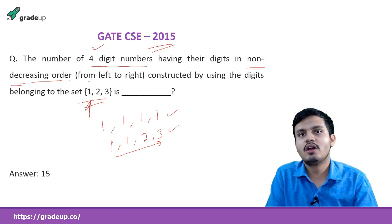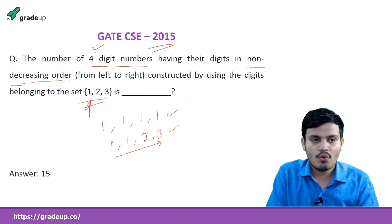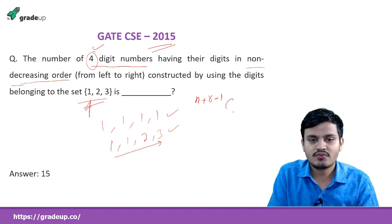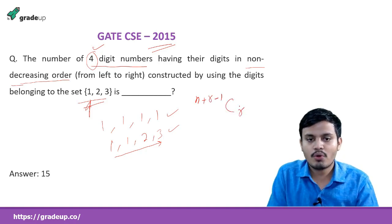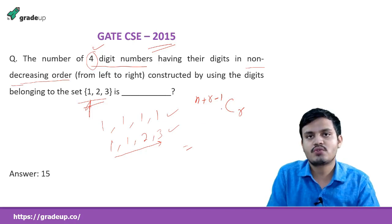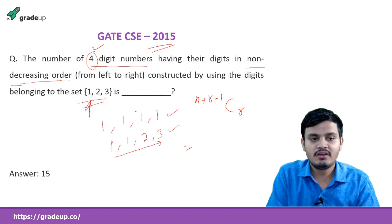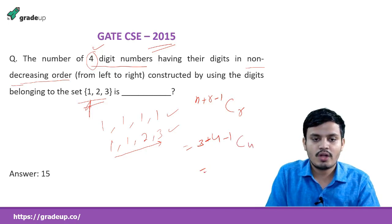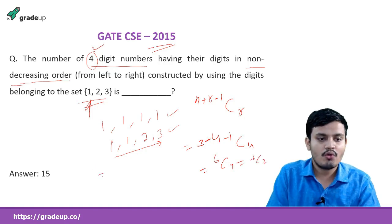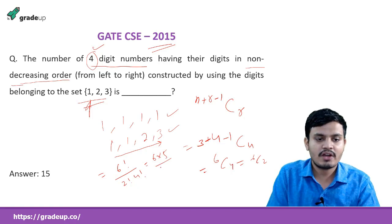The formula for combination with repetition is C(n + r − 1, r), where r is the number of objects to select. Here n = 3 (the set {1,2,3}) and r = 4 (four-digit number). So it becomes C(3 + 4 − 1, 4) = C(6, 4) = C(6, 2). Calculating: 6! / (2! × 4!) = (6 × 5) / 2 = 15. So the answer is 15.